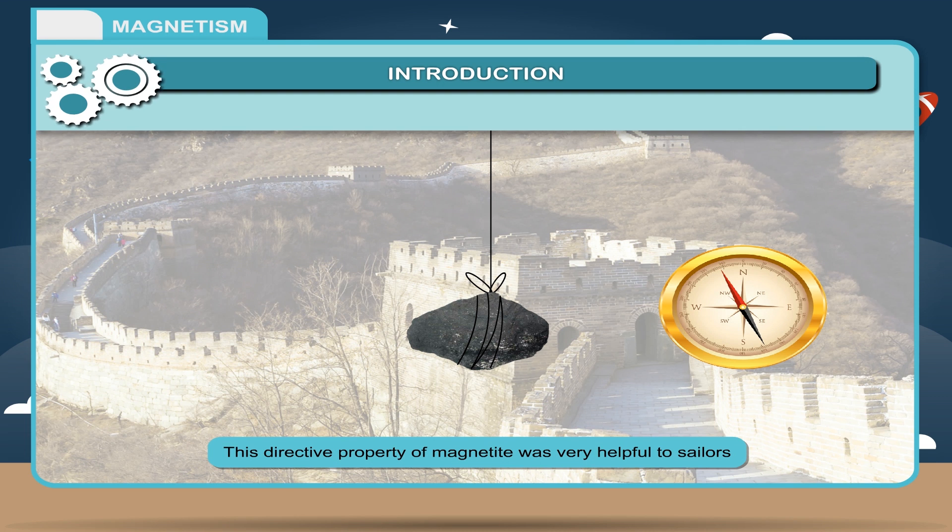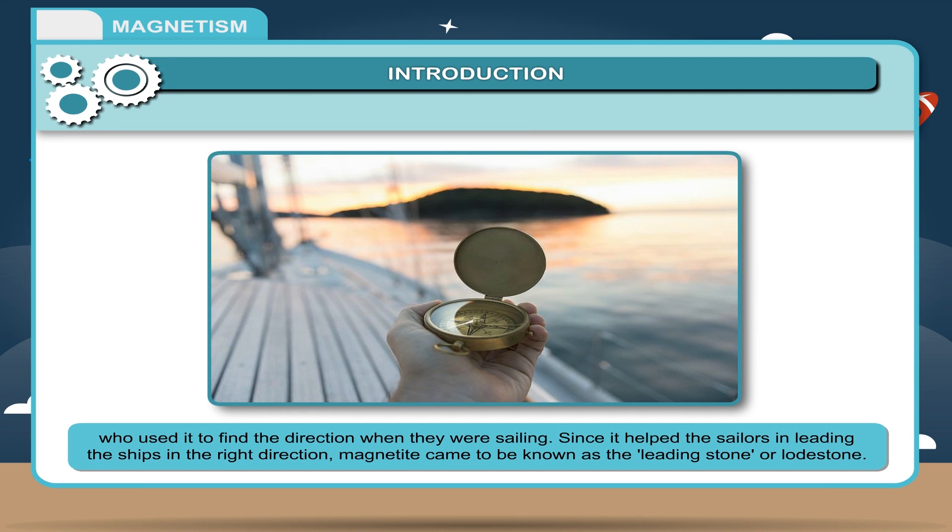This directive property of magnetite was very helpful to sailors, who used it to find the direction when they were sailing. Since it helped the sailors in leading the ships in the right direction, magnetite came to be known as the leading stone or loadstone.